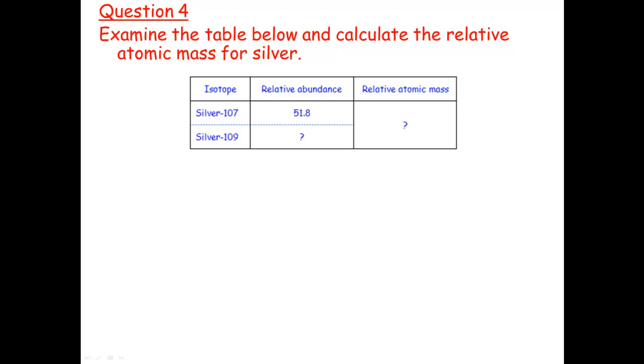Have a go at question 4 here. You've got that in your notes. See how you go. So keep in mind that the relative abundances always have to equal 100%. Pause this and I'll run through the answer with you.